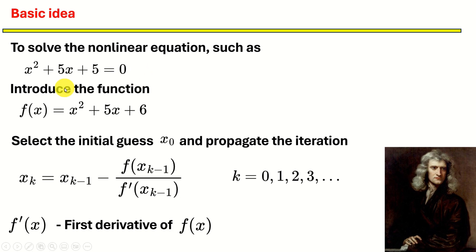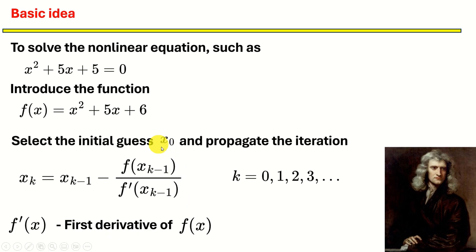First of all, we are going to introduce the function where on the right-hand side we state the equation and define it as a function f of x. The basic idea of Newton's method is represented by this iteration. We pick an initial guess of the solution x, denoted as x0, and we propagate this iteration.